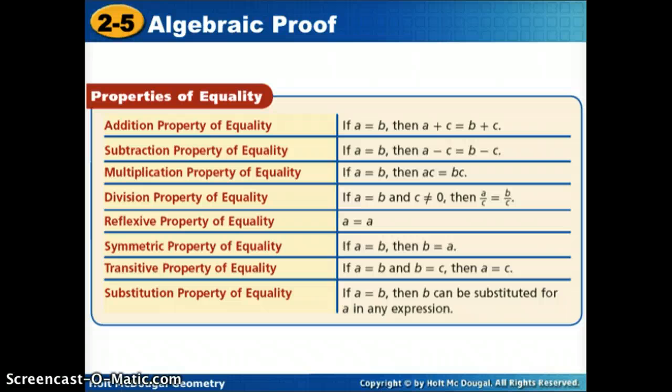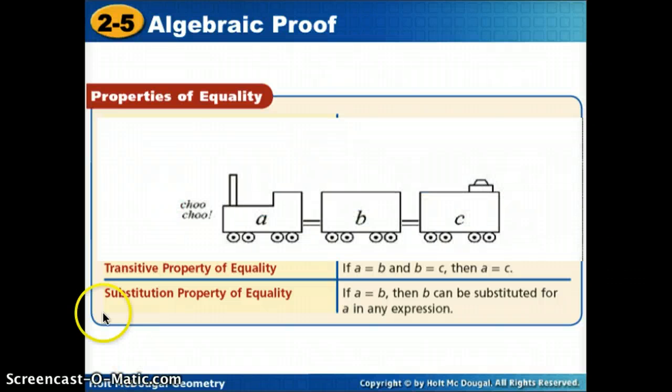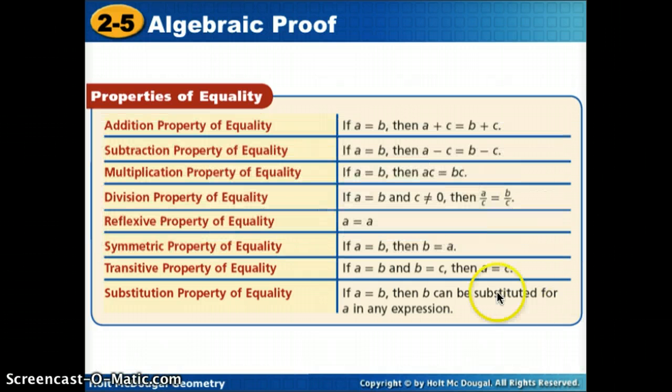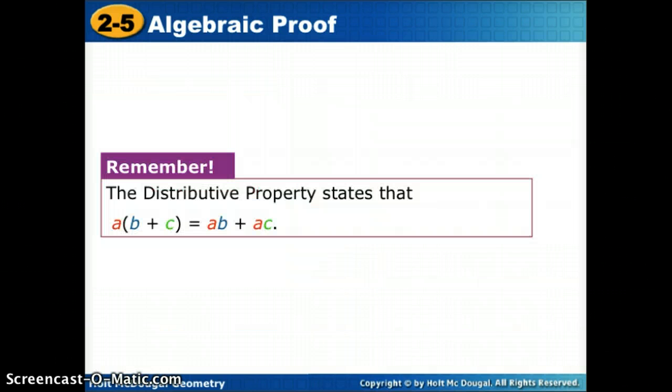Now the transitive property has to be like a train. Notice it's like we have a connector. If A is equal to B and B is equal to C, connect that train and say that A is equal to C. So that's our transitive property. Look for a connector so I can say that the first is equal to the last. Now substitution property, we've substituted a number in for X numerous times but there is a property that says we can do that. So if A is equal to B then B can be substituted anywhere for A in an expression. There is one more, the distributive property. If I distribute the A inside a set of parentheses, I multiply it by both pieces, that's using the distributive property.